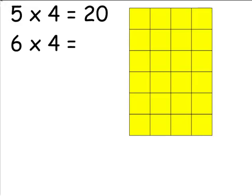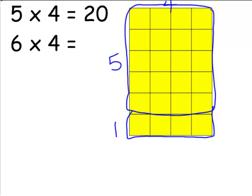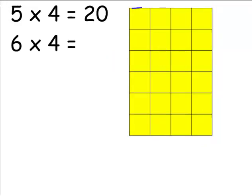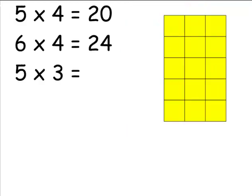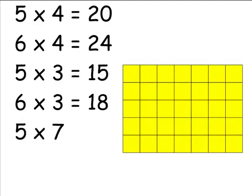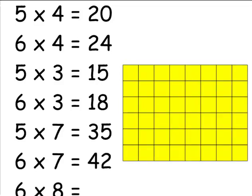6 times 4 could be modeled as 5 times 4 and 1 times 4, but it could also be modeled as 6 times 2 and 6 times 2 — both are great strategies for that fact. I present the problems one by one and always leave the previous questions on the board for support. I want my students to use what they know to help them with what they don't know. If someone suggests a particularly good strategy, ask someone else to restate it in their own words, or have everyone turn to a neighbor and explain it. So 5 times 3 is followed by 6 times 3, and 5 times 7 followed by 6 times 7. The final challenge fact is 6 times 8 presented with no helper fact, though the 6th row of the array could be pulled down if you wanted to during the discussion.